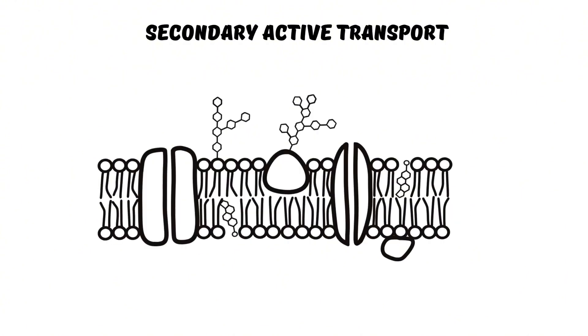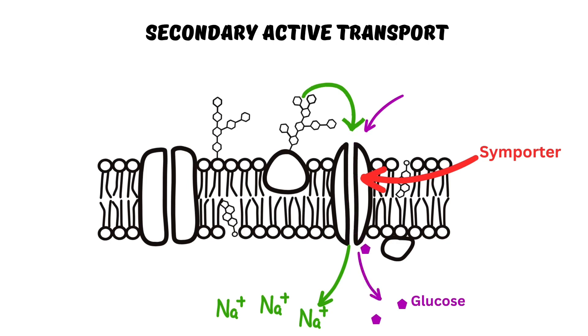For example, cells use a protein called a symporter to bring in glucose. This protein grabs onto sodium ions outside the cell. As sodium ions move into the cell, they give energy to the symporter, allowing it to bring glucose inside against its concentration gradient.